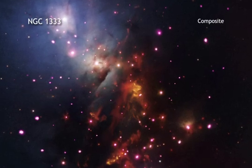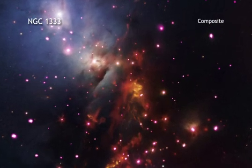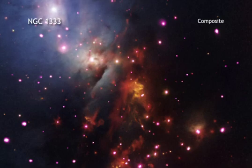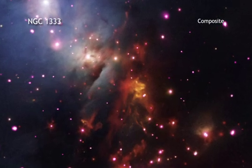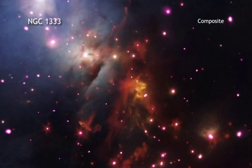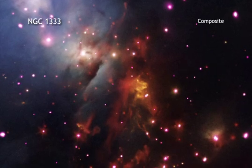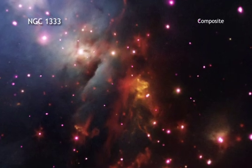NGC 1333 is a star cluster populated with many young stars that are less than 2 million years old, a blink of an eye in astronomical terms for stars like the Sun that are expected to burn for billions of years.